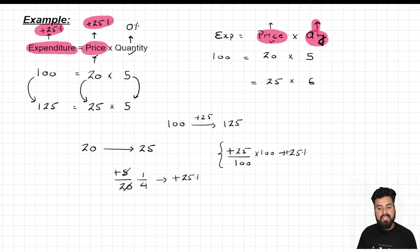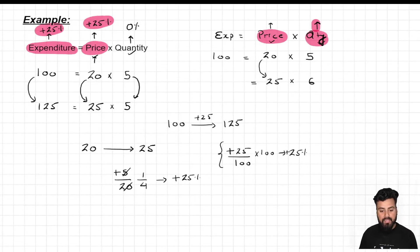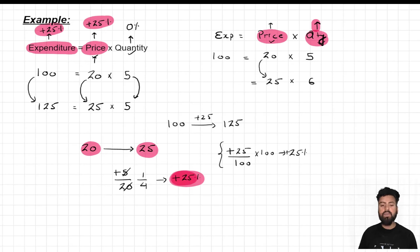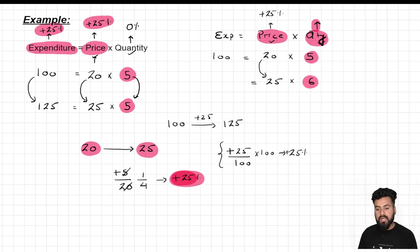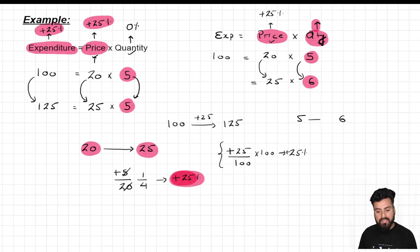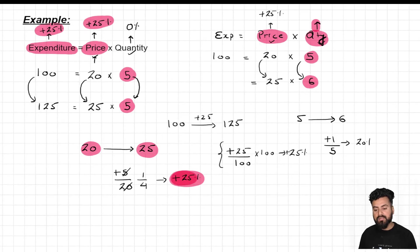Let's calculate the percentage increase in both variables. Price is increased from 20 to 25 — as we calculated before, that's a 25% increase. This time I haven't kept quantity constant — I've increased it too. Quantity went from initial 5 to new 6, so increase is 1. 1 over 5 in percentage terms is 20%. So quantity increased by 20%.